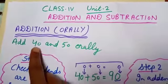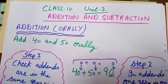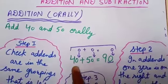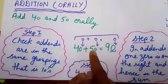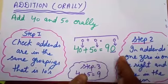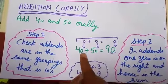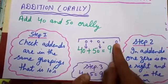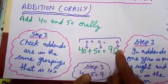If I want to add 40 and 50 orally, first step: I will check addends are in the same grouping, that is 10. Second step: in the addends, 0 is on the right, hence in the sum, 0 plus 0 equals 0. So I will write 0 here.